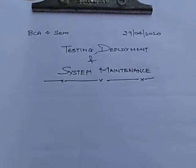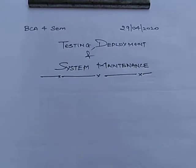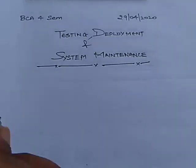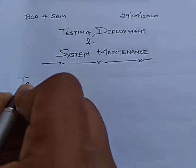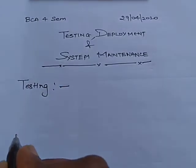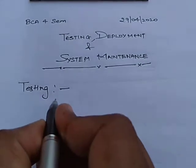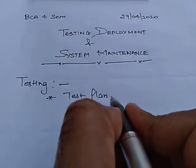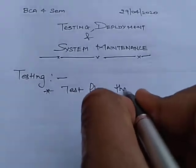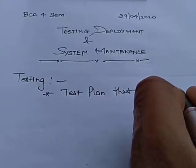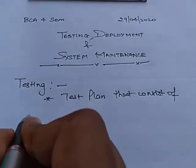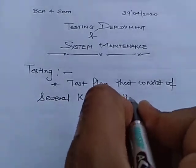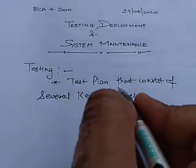Today we will discuss the remaining phases of STLC, that is testing, deployment, and system maintenance. First of all, we will be describing the testing process. System testing requires a test plan that consists of several key activities and steps.